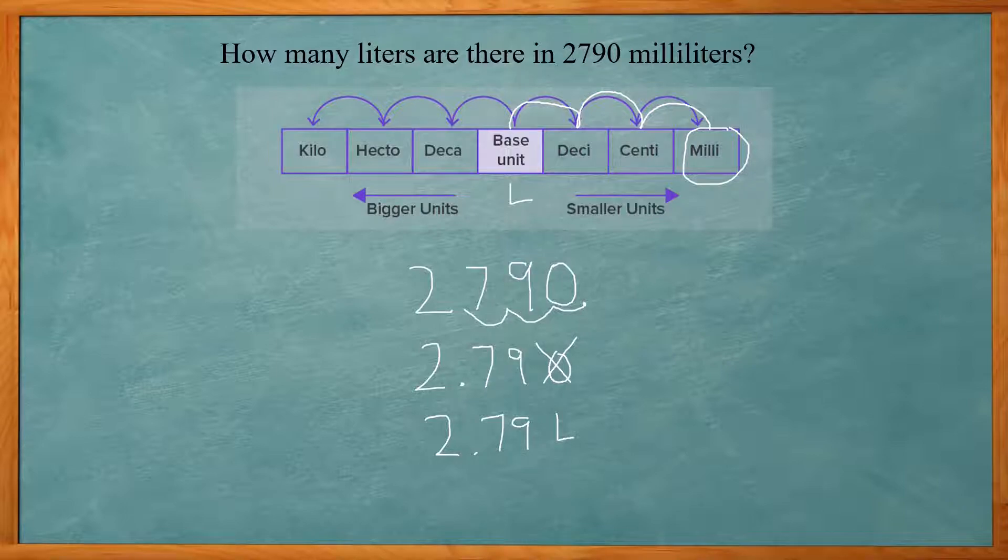So if you're converting from a lower unit to a higher unit, you're going to have less of it. So here we had 2,790 milliliters. We're going to have less liters.